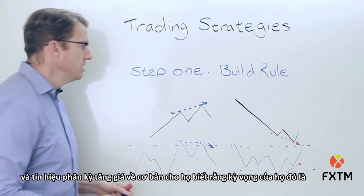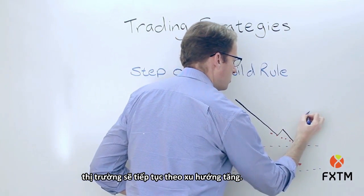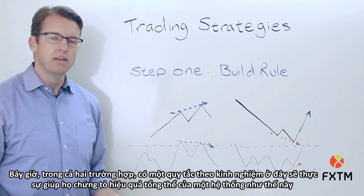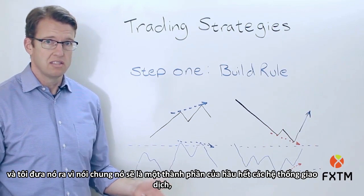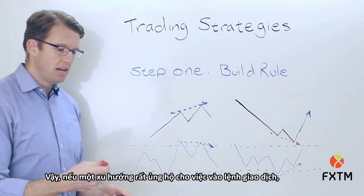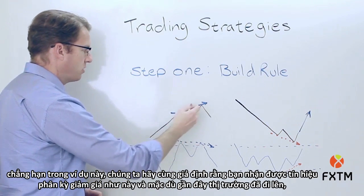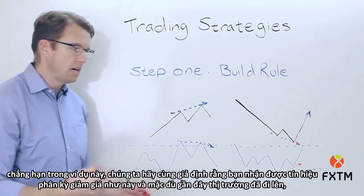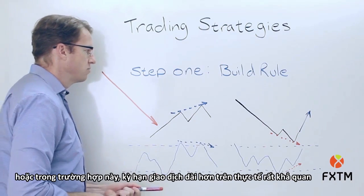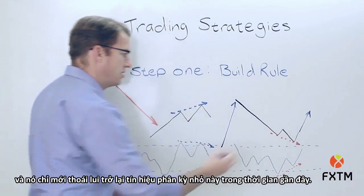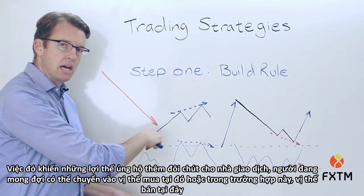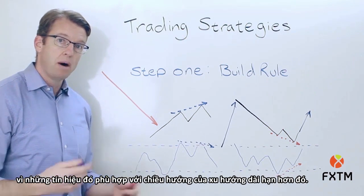The bullish divergence is basically telling them that their expectation is that the market is going to continue to the upside. In both cases, there's a rule of thumb that will actually help improve the overall performance of a system like this, and it should generally be a component of most trading systems, especially those where you're trying to take advantage of the trend. If the trend is very supportive for the trade entry — say you get a bearish divergence, and although the market has been recently moving higher, the long-term trend was actually negative — that helps to put the odds further in favor of the trader. Are those signals conforming to the bias of that longer-term trend?